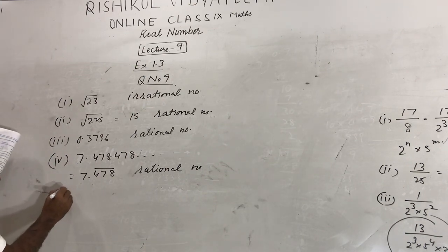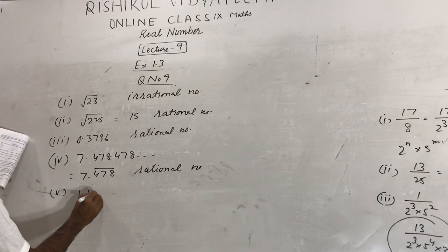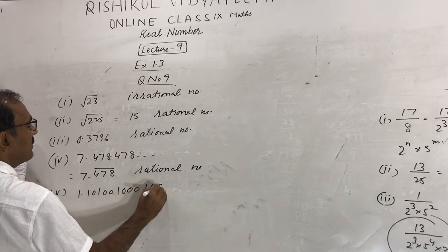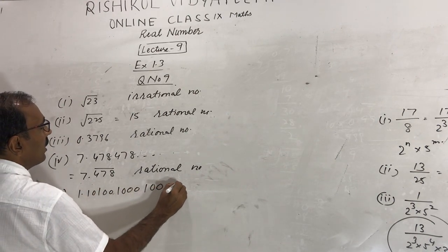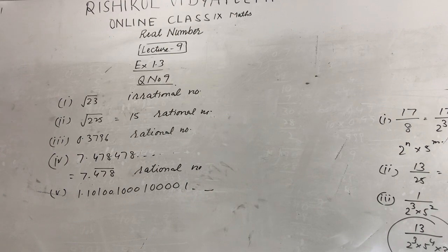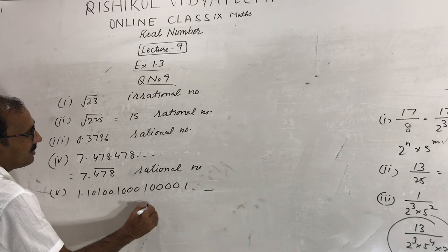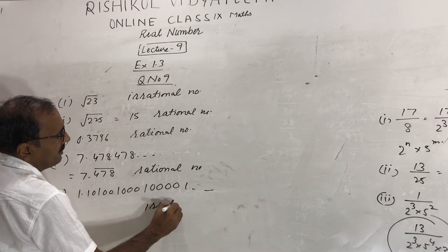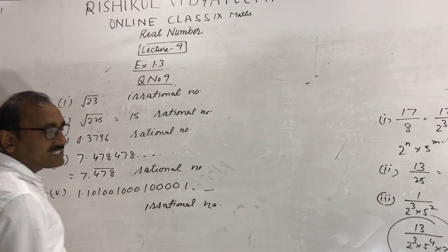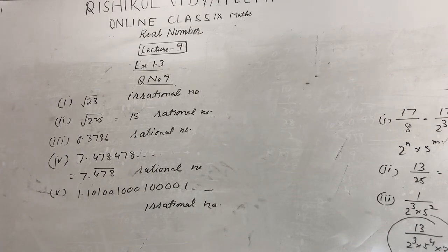The last one is 1.101001000100001... up to so on. This number is non-terminating and non-repeating decimal, so it is called an irrational number.